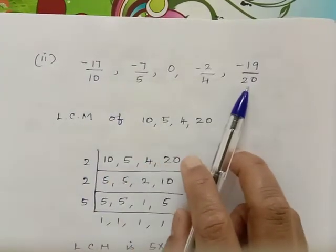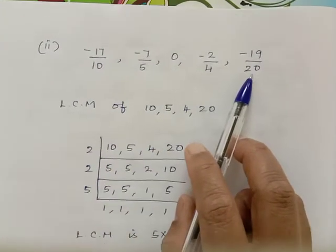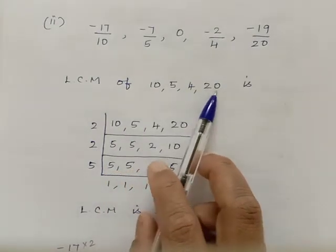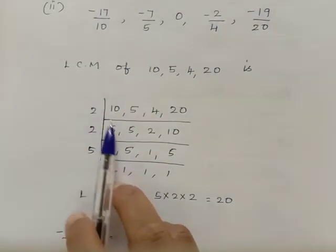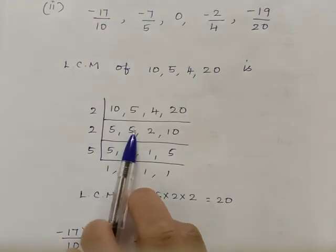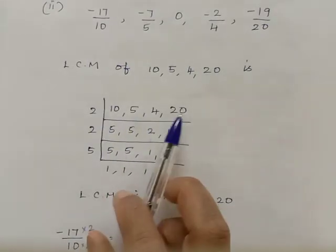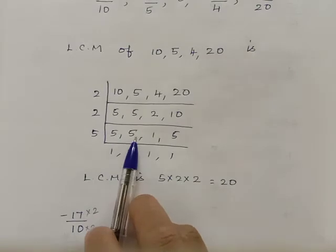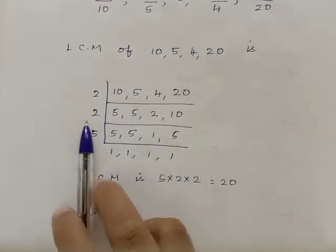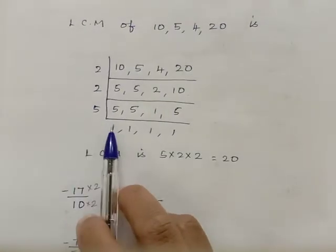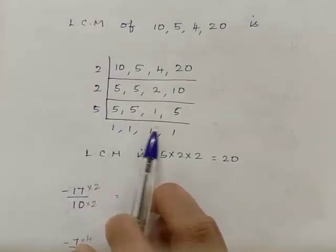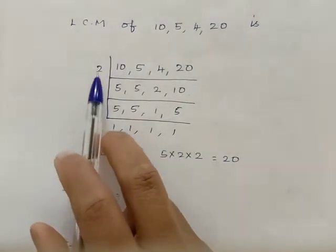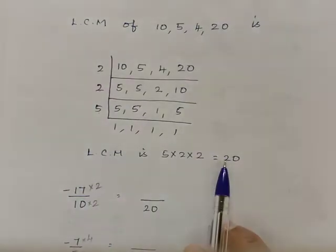First the denominator values are different, so we find the LCM of 10, 5, 4, 20. By the 2 times table: 5 twos are 10, 5 is not possible, 2 twos are 4, 10 twos are 20. Then 5 is not possible, 1 twos are 2, 5 twos are 10. By the 5 times table: 1 five is 5, 1 five is 5, 1 five is 5. Therefore LCM is 5 × 2 × 2 = 20.